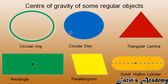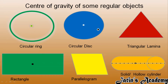Center of gravity for some regular objects — we have to remember what the regular objects are and where their center of gravity is. First, a circular ring has its center of gravity at its center. A circular disc also has its center of gravity at the center.